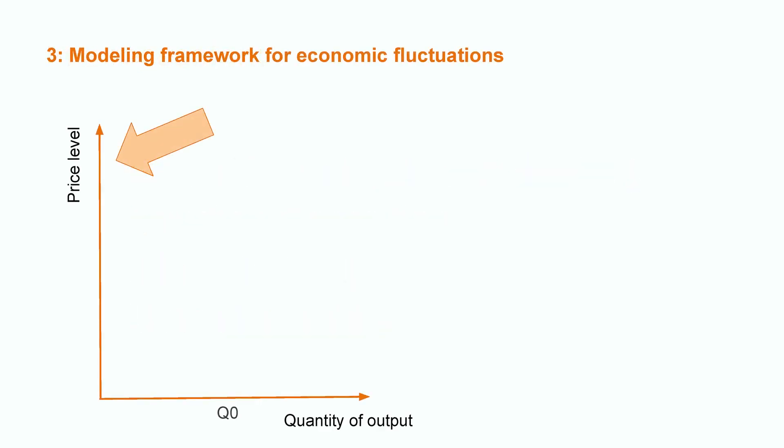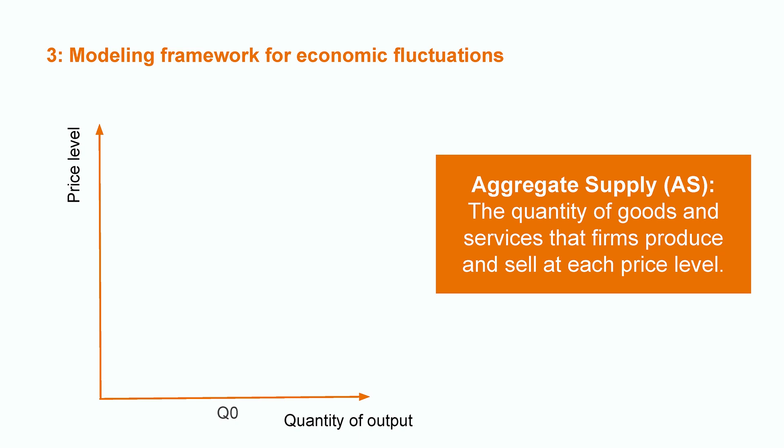How do economists model economic fluctuations? One approach is to analyze aggregate demand and aggregate supply in the economy. Let's talk about aggregate supply first. Here on the graph, the vertical axis represents the overall price level in the economy, and on the horizontal axis you can see the quantity of goods and services produced in the economy. The aggregate supply curve represents the amount of goods and services that producers are willing to produce at any given price level, which is the GDP. In the long run, the aggregate supply is just a vertical line, represented by LRAS.